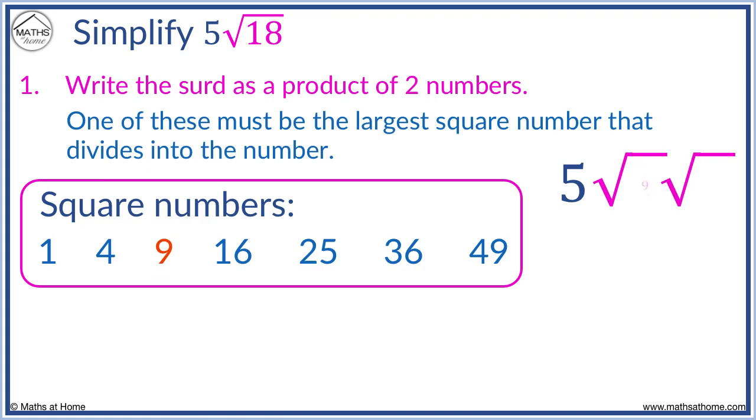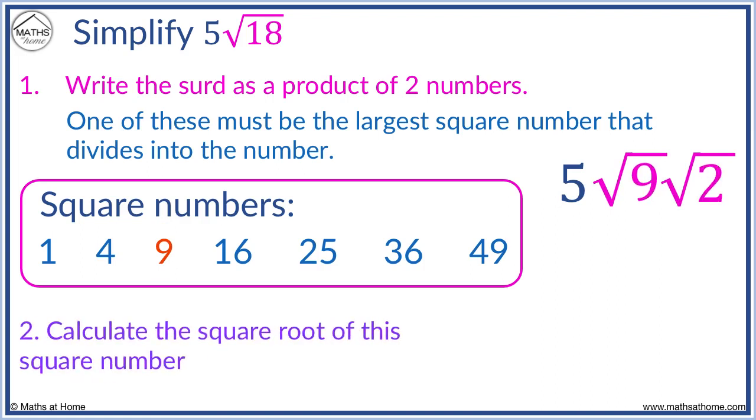9 times 2 equals 18. Now we square root 9. First we leave the 5 out front. The square root of 9 is 3. We always leave surds that we cannot square root exactly as they are.